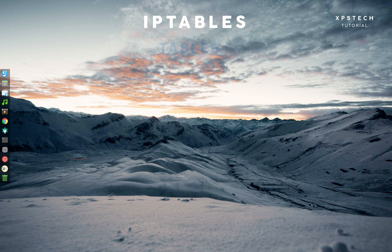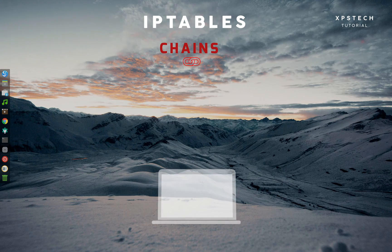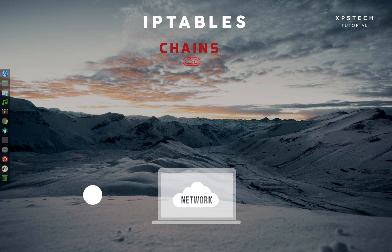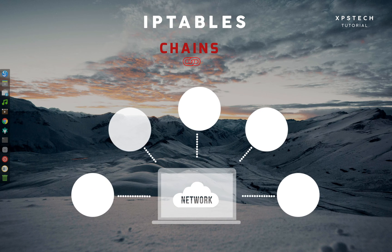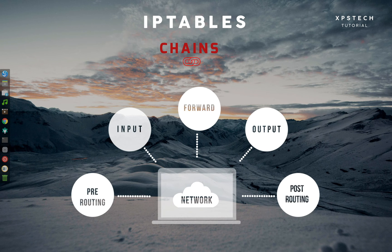Next are chains. Chains are like points in the route of a packet where you can apply rules. There are five chains in IPTables: pre-routing, input, forward, output, and post-routing. Not all chains are available for all tables. Each chain gives you the option to take action on the packet at that particular point in the packet route.